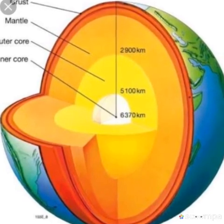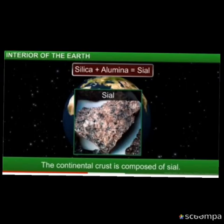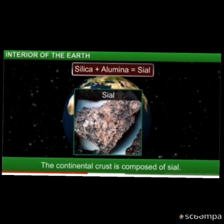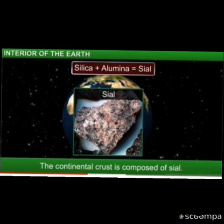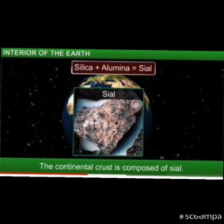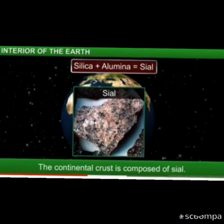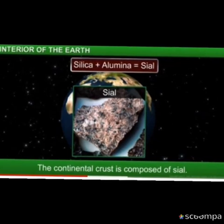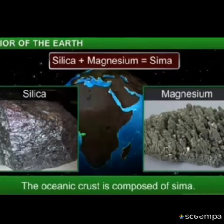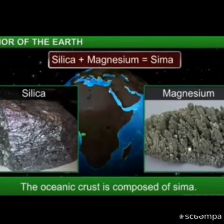The minerals that mainly constitute the continental masses are silica and aluminium. It is therefore called Sial — Si for silica and Al for aluminium. The oceanic crust mainly consists of silica and magnesium. It is therefore called Sima — Si for silica and Ma for magnesium.